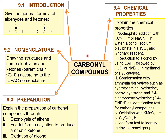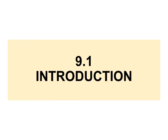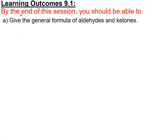Here's the mind map of learning outcomes on what we need to learn in chapter 9. Here are the learning outcomes for subtopic 9.1 — by the end of the lesson, you should know how to give the general formula of aldehydes and ketones.